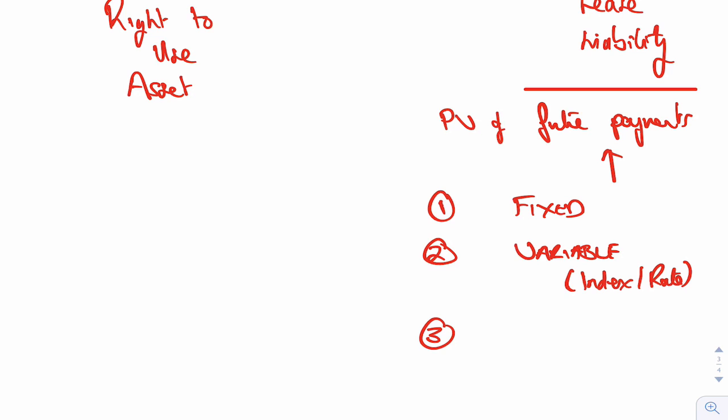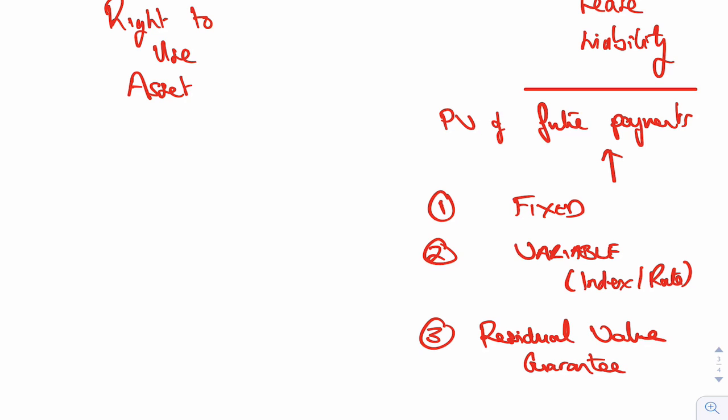Another future payment that you'll have is a residual value, so that's the asset at the end of the lease, the residual value. If you guarantee a residual value, well that's a future lease payment to you. So that's one of the payments that we're going to have to take into account and discount.